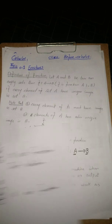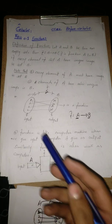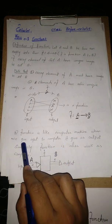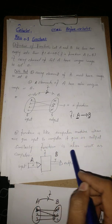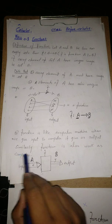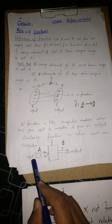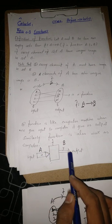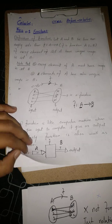That is a very simple definition of function. We can also understand this definition by thinking of a function like a computer machine. When we give input to a computer, it gives us an output. Similarly, a function works like a computer: we put an input value from set A into the function, and it gives us an output y.